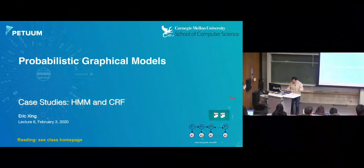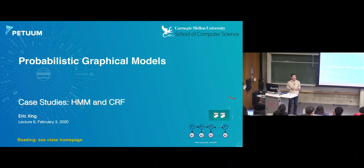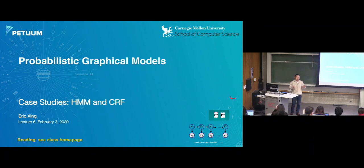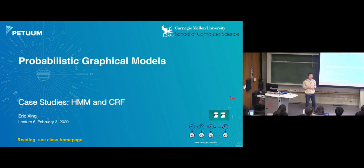We've spent a couple of classes already on basic formalisms of graphical models, directed and undirected, and we know how to do exact inference and maximum likelihood learning with or without observations. Today and maybe next lecture, I'm going to converge a little bit and give you a few use cases, starting from the very fundamental and basic ones and then moving to some modern cases. Today's lecture will be dense because you'll see everything we've talked about converging together for a single problem — the HMM and the CRF.